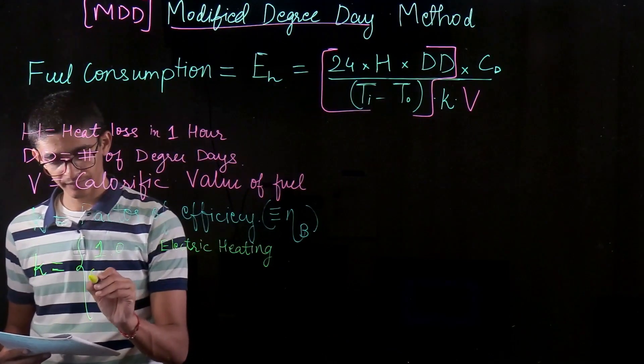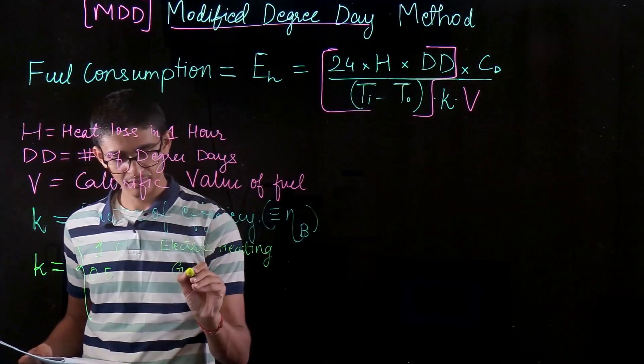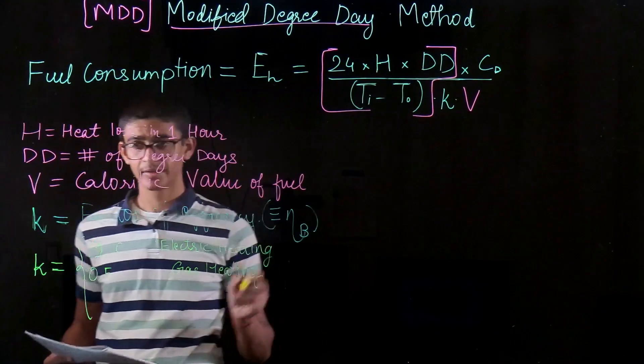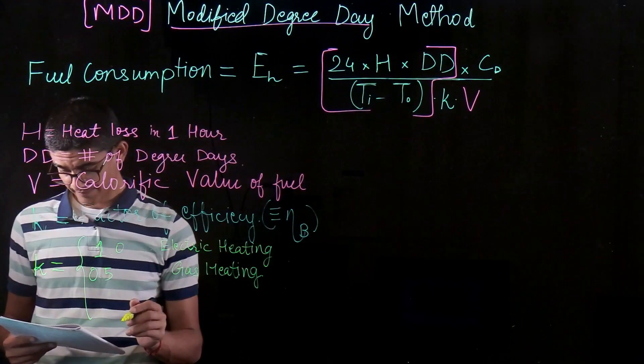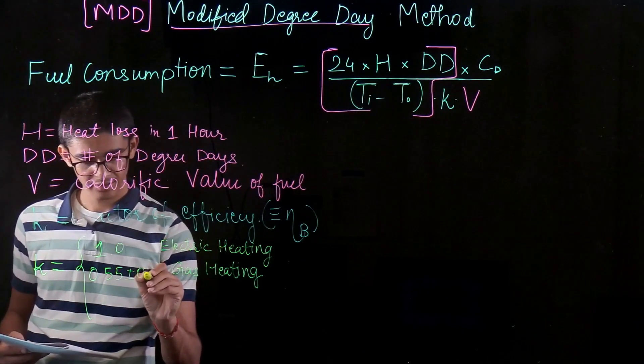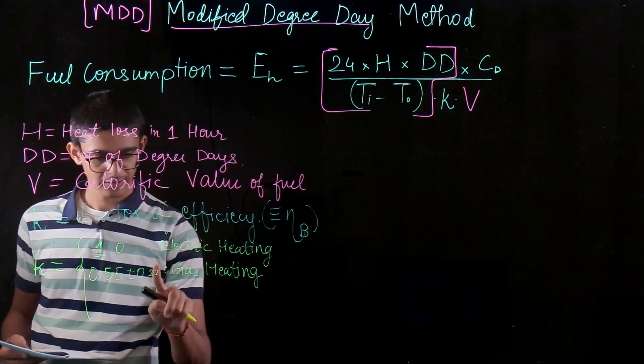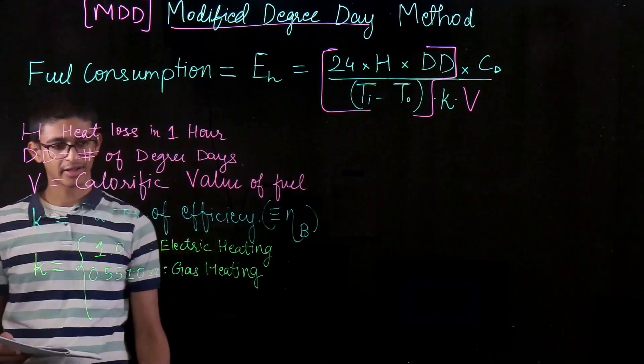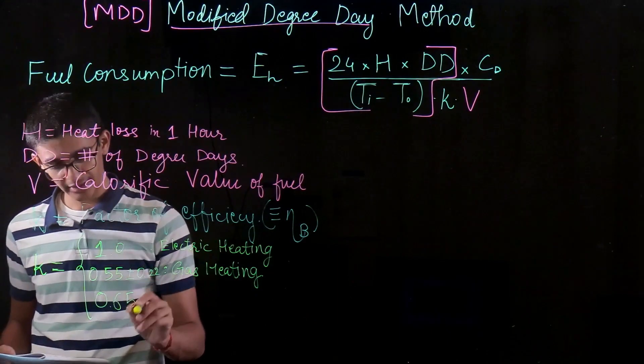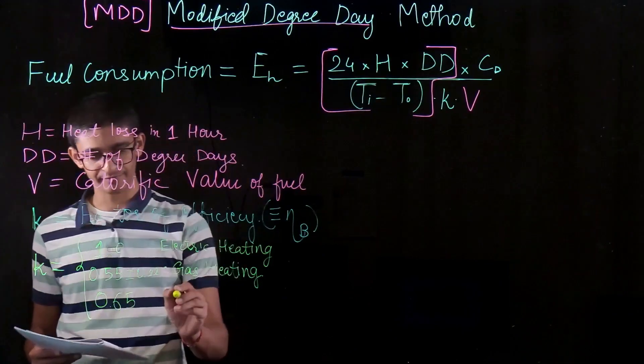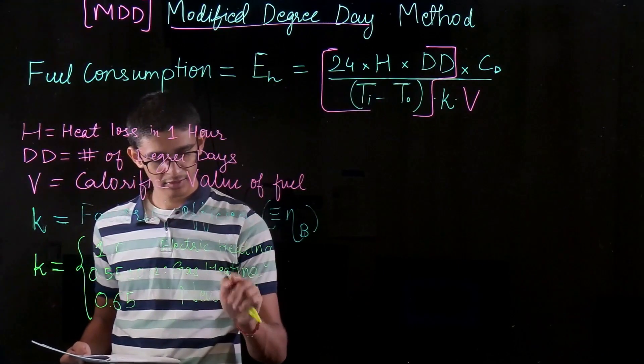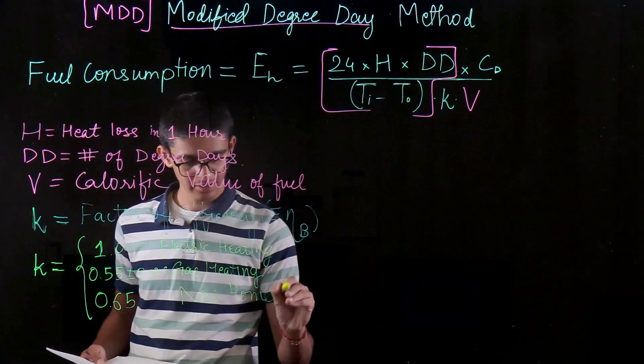While if we have gas heating, then my value is 0.55 plus minus 0.22. That's for gas heating. But if we have new homes available which have gas heating, then my efficiency is 0.65. These are new homes built after 1965.